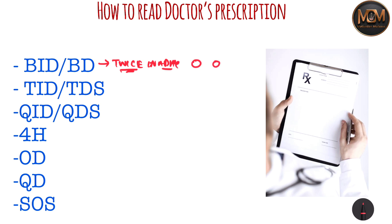Now let's talk about TID or TDS. Whenever you see TID or TDS it means you have to take that medicine thrice a day — three times a day. It can also be written like morning, evening, and night.